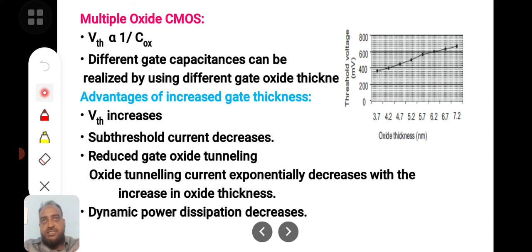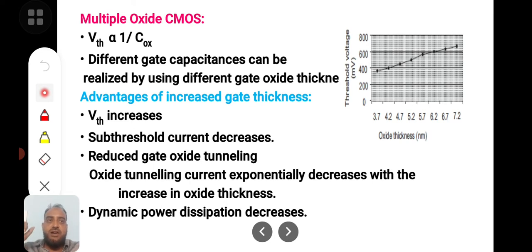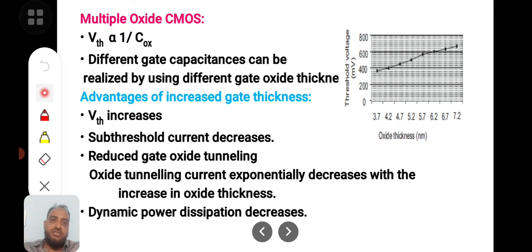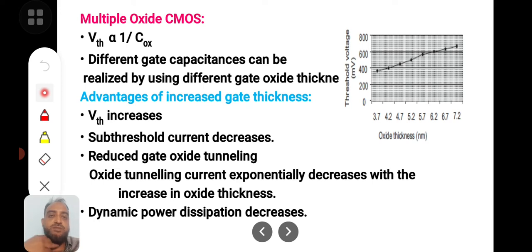Dynamic power dissipation also decreases because the capacitance is altered by the thickness. Using different — specifically thick — oxide thicknesses increases the distance between the plates. As the distance between plates increases, capacitance lowers. When capacitance lowers, Vth will increase. This is the concept of having multiple oxide gate capacitors: increasing oxide thickness decreases capacitance, thereby increasing threshold voltage.